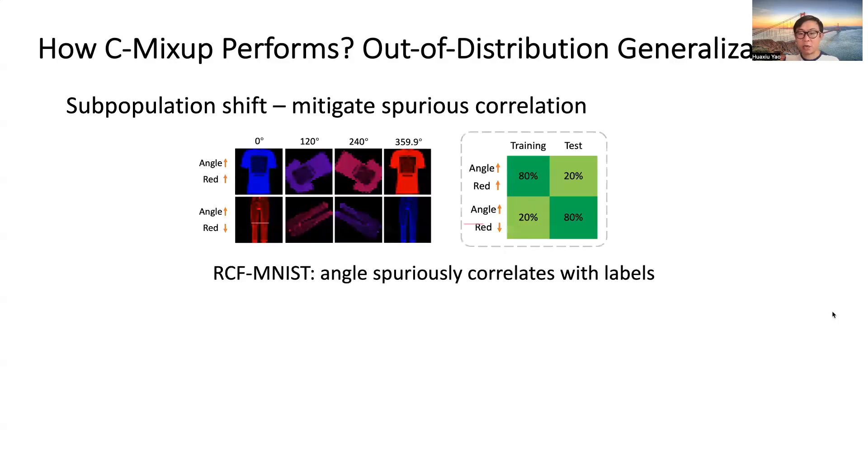We further evaluate the performance on out-of-distribution robustness. Here we specifically investigate subpopulation shift and domain shift. In subpopulation shift, we create a new RCF-MNIST dataset based on the original Fashion-MNIST dataset. Here the angle of rotation for each object spuriously correlates with labels.